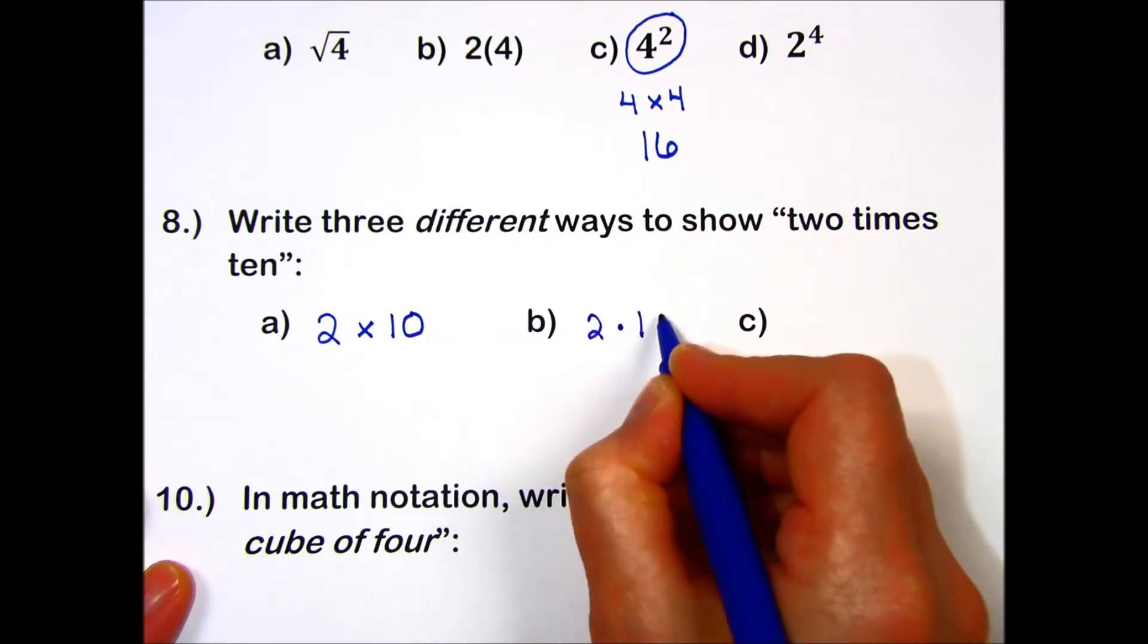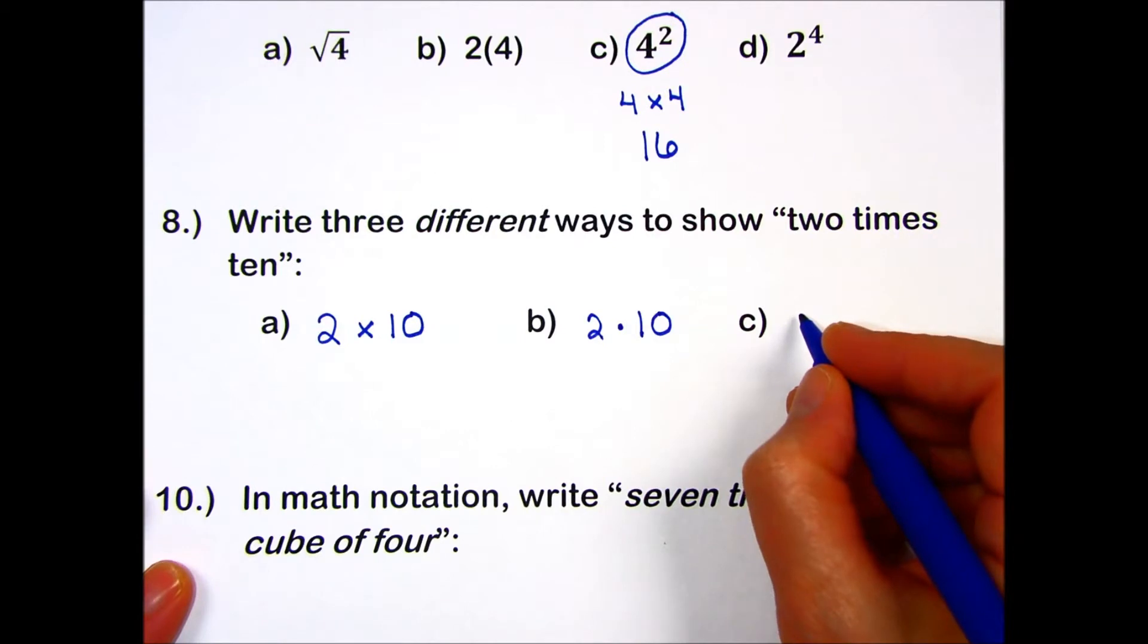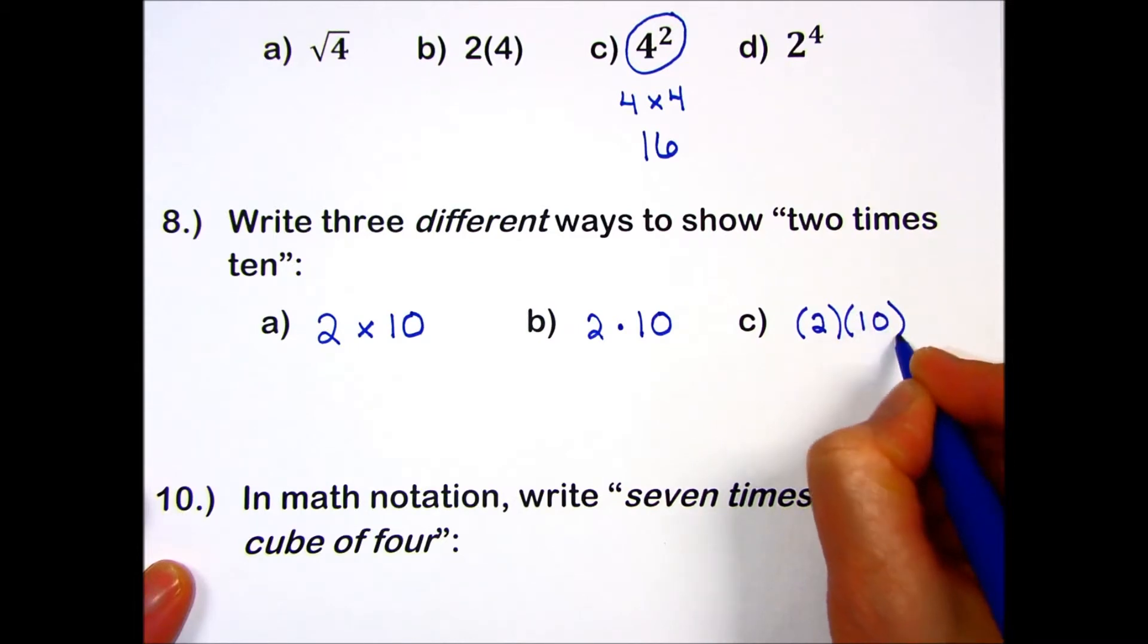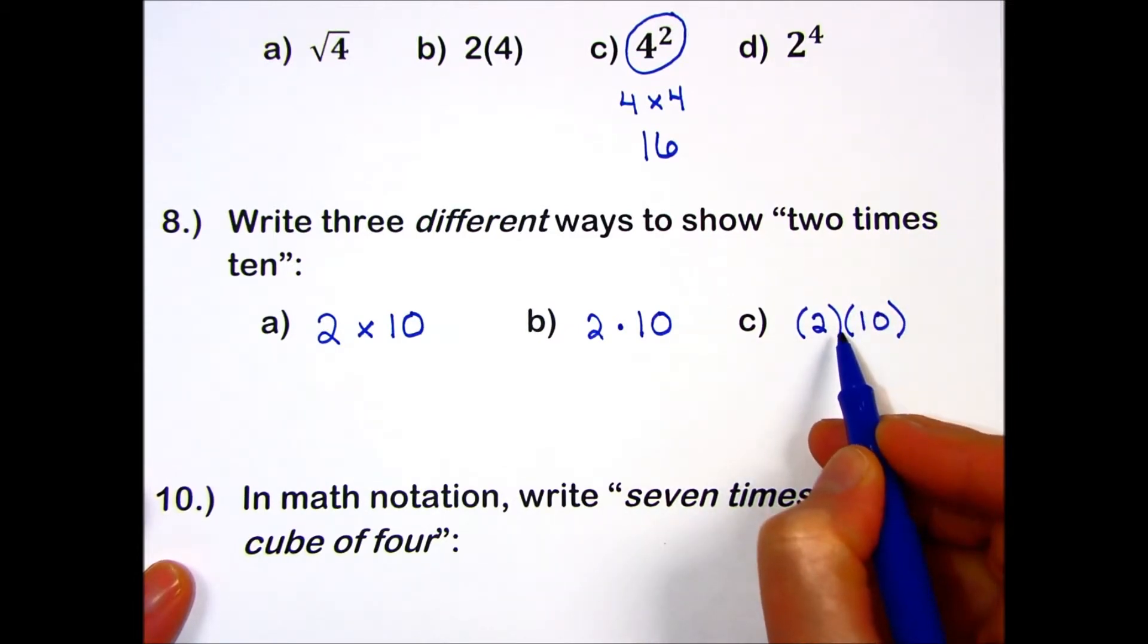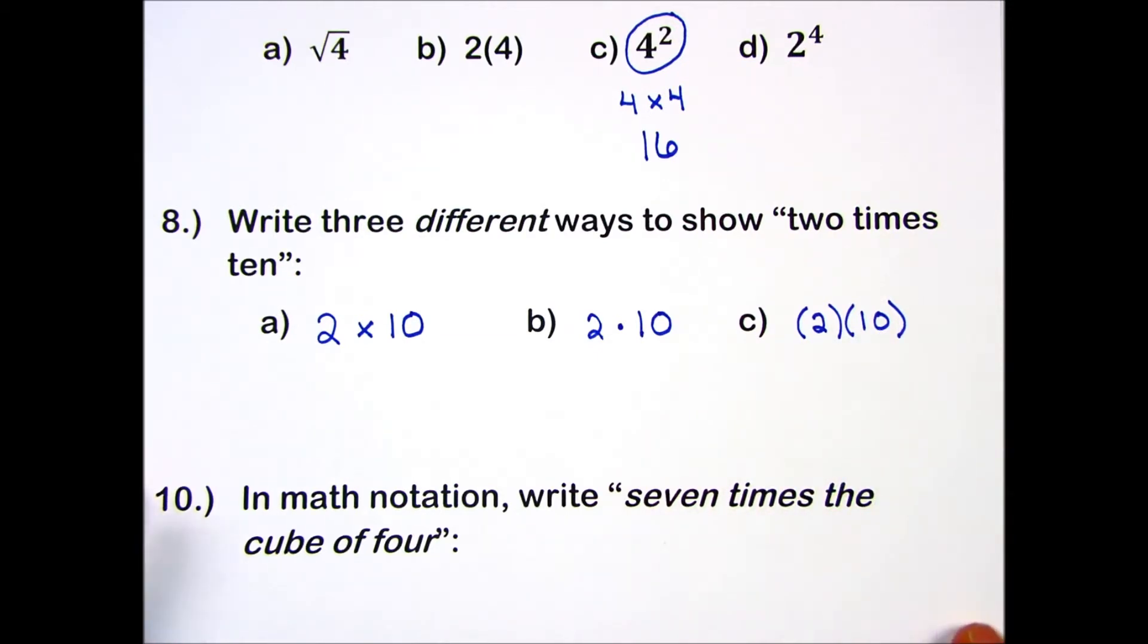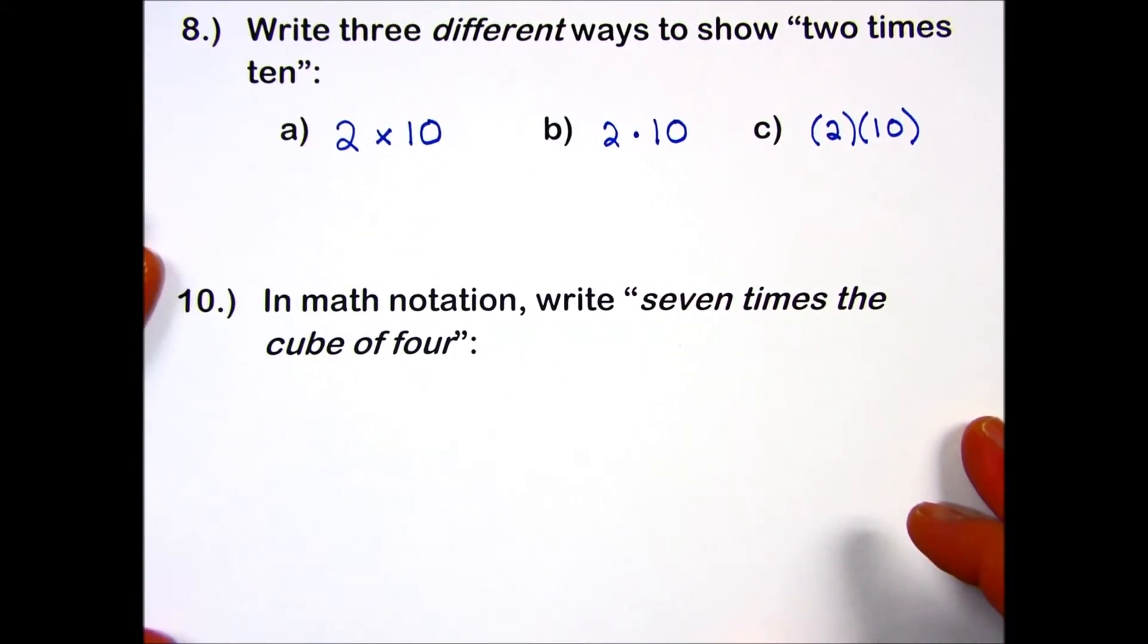Another way is simply to use a little dot: two times ten. Or sometimes a star, which is the key that you will find on your computer keyboard. And another way is to use parentheses, and I can enclose both numbers in parentheses. When there's no symbol in between, we assume we mean multiplication: two times ten.